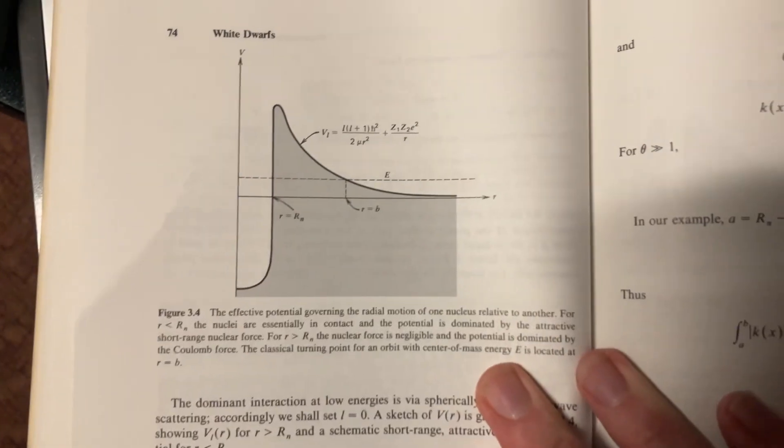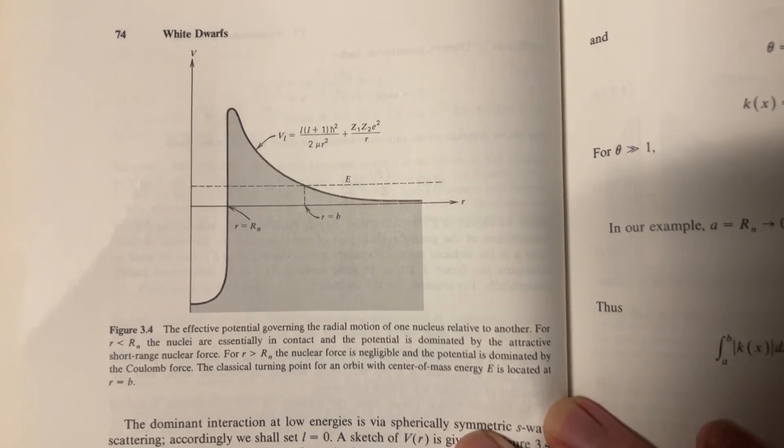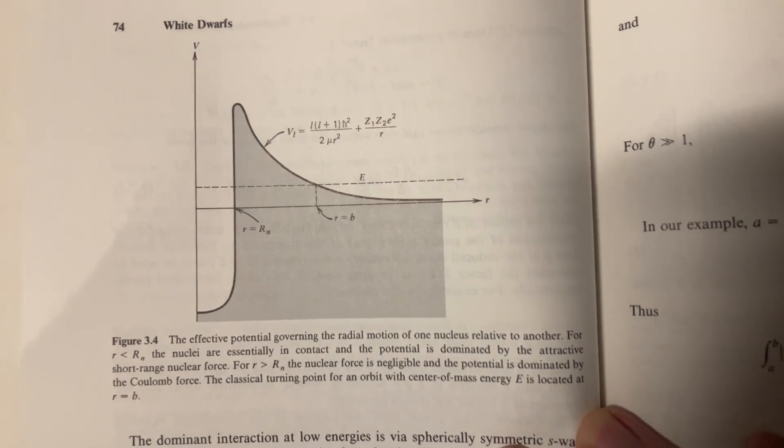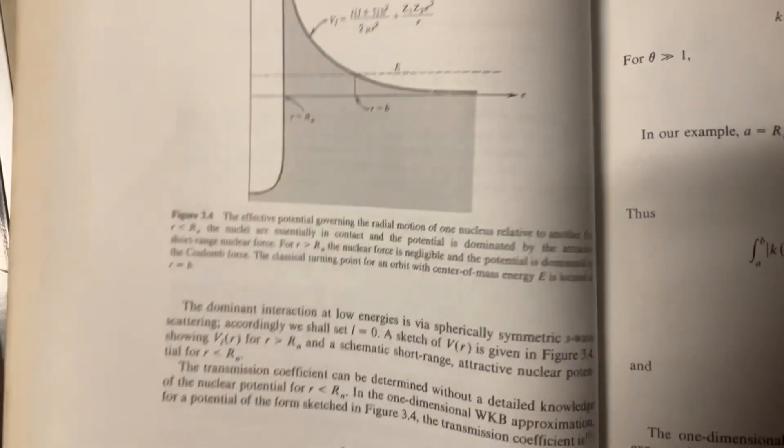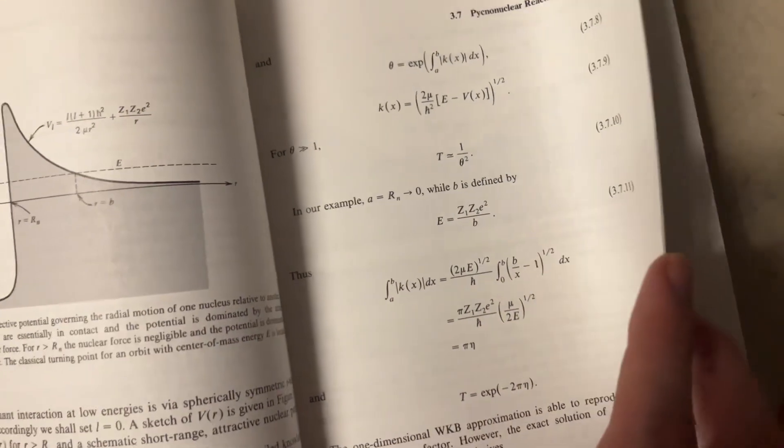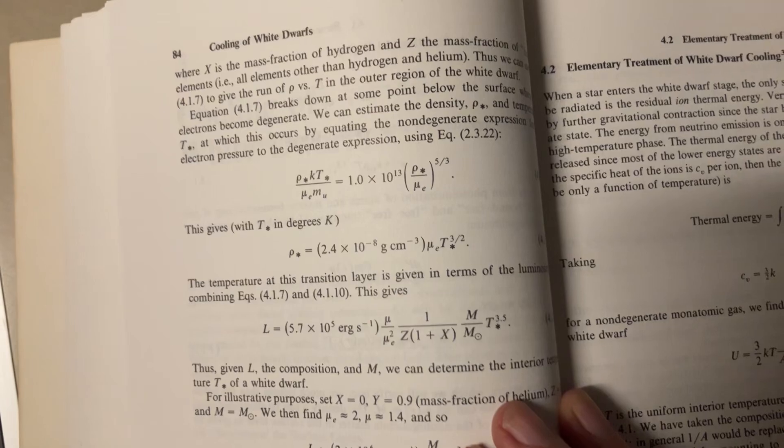What is this? White dwarfs here. Effective potential. Radial motion. Maybe some kind of radial motion from one nucleus relative to another. Nuclear forces. And some integrals here.